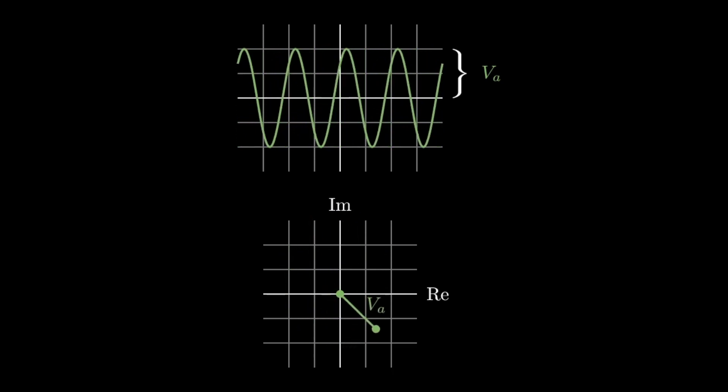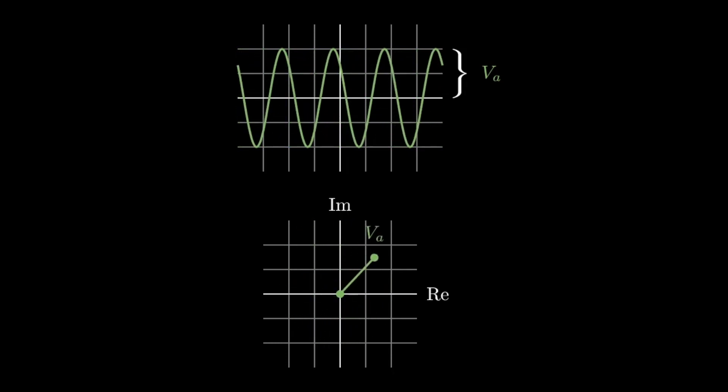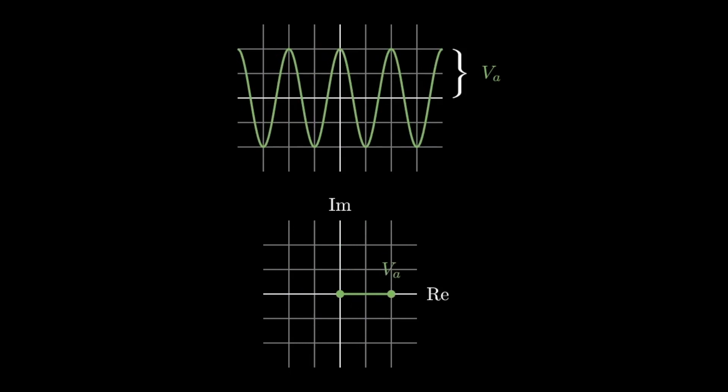Notice that as the wave moves across the whole of its wavelength, the vector rotates a full 360 degrees. This vector is normally called a phasor because it encodes the phase of the wave.